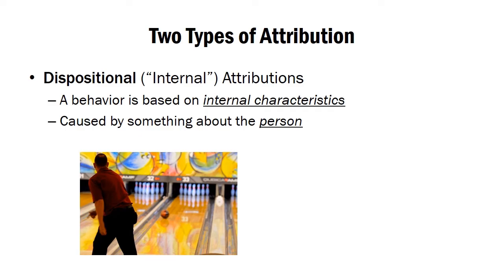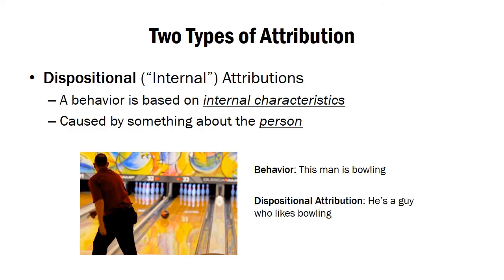As an example, you see someone going bowling. The behavior here is a man is bowling, and the question is why is he doing this? If you draw a dispositional attribution, you're saying he's a guy who likes bowling — something about that person and the qualities of this individual is the reason for the behavior. It's that this person likes to do it; it's his opinion of the activity.